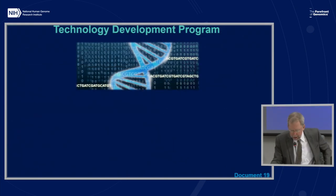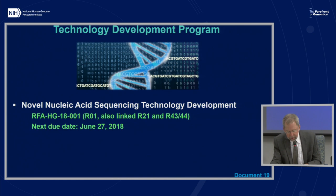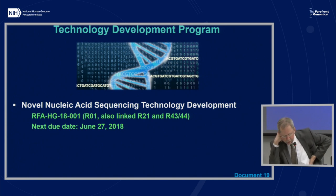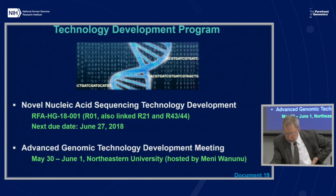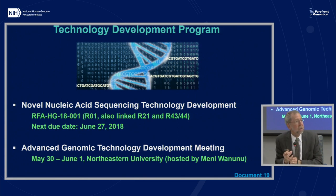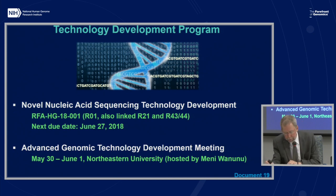NHGRI's technology development program continues to move forward, paving the way to new technologies and discoveries in genomics. NHGRI is again soliciting applications for novel nucleic acid sequencing technology development involving both DNA and RNA, including direct RNA sequencing. The first application due date for this new request for applications is June 27th. An advanced genomic technology development meeting will be held at Northeastern University later this month, where novel DNA sequencing and genomic technology developers will come together to facilitate collaborations, alongside a public meeting allowing broader community participation and discussion of NHGRI's next phase of strategic planning.